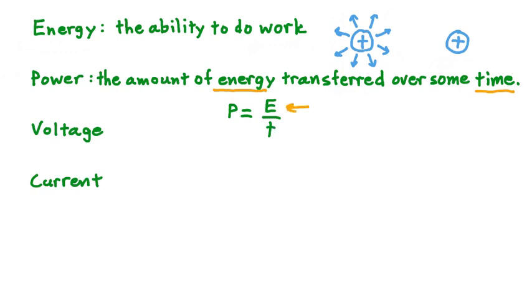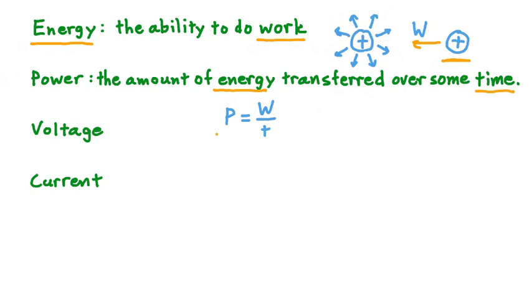At this point, let's recall that energy is the ability to do work. Going back to our positive charge in an electric field, let's say we did some amount of work W in moving it towards the other positive charge giving off the field. In doing that much work, measured in joules, we've exerted that much energy, also measured in joules. So for this process, we can rewrite the energy used in terms of the work done. The power is equal to the work we've done in moving the electric charge divided by the time it took to move it.